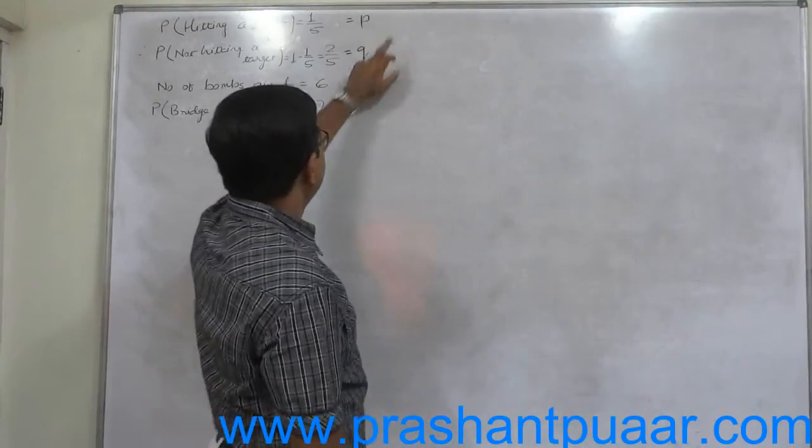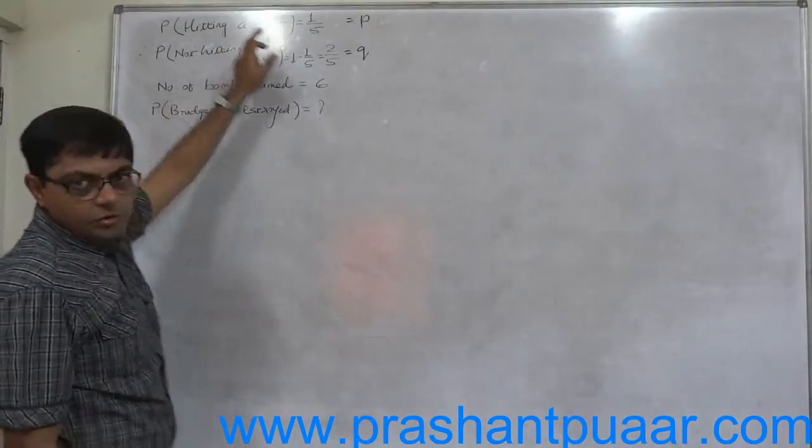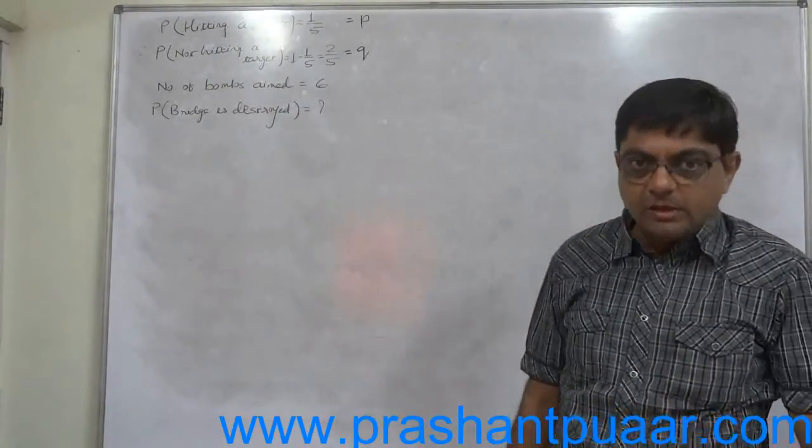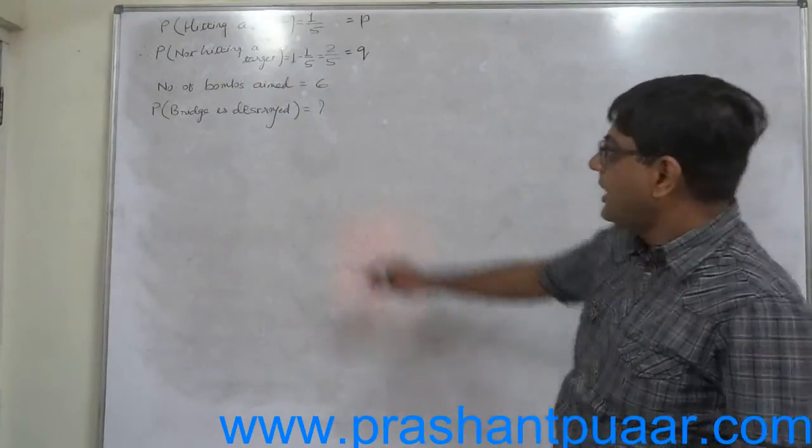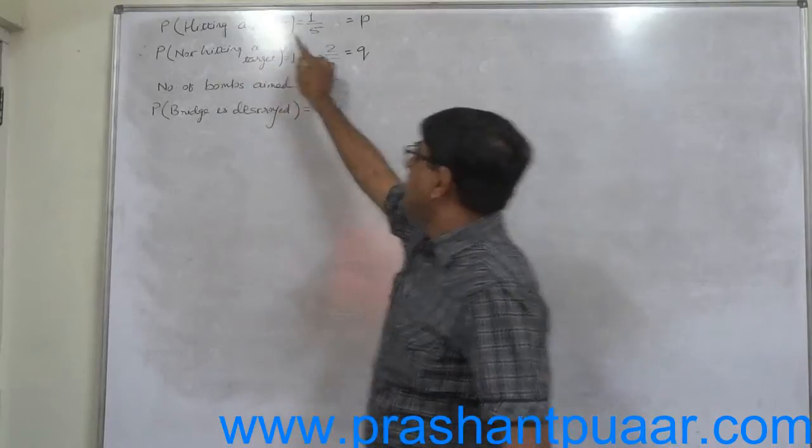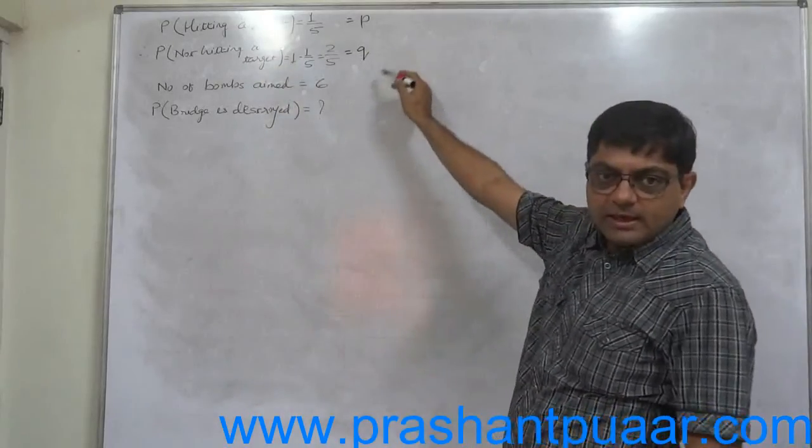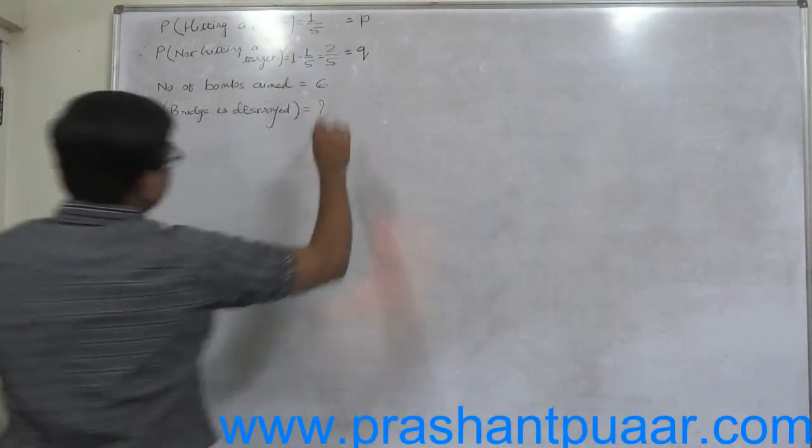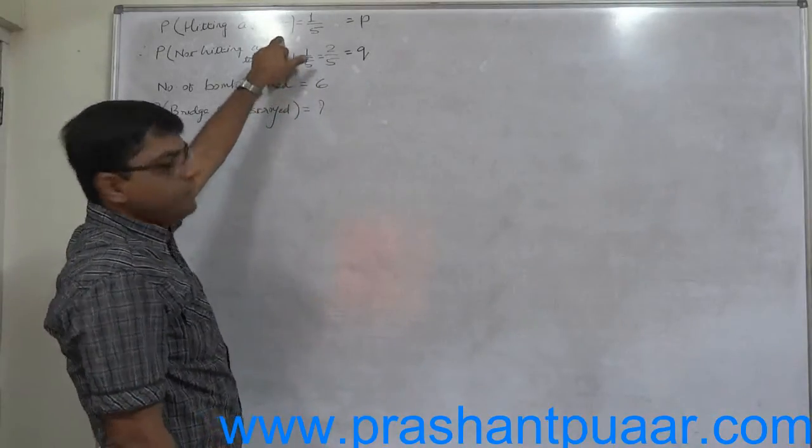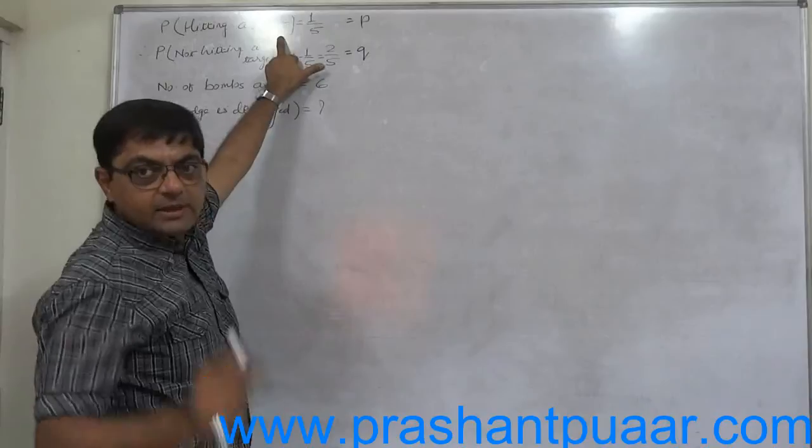Why is P equal to 1 by 5? Ultimately we want to find the probability that the bridge is destroyed. The bridge can be destroyed only if a bomb hits the target. So probability of hitting a target becomes P for us, and probability of not hitting a target becomes Q for us. The general probability for what we are going to find the final answer becomes P always.